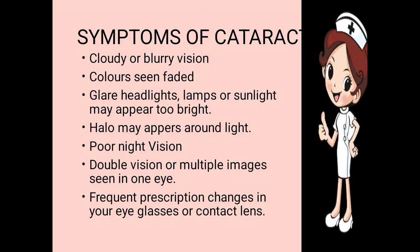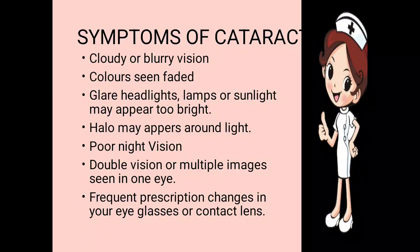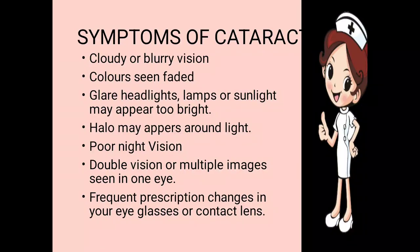Now, what are the symptoms of cataract? The first symptom is cloudy or blurry vision — the vision is there, but everything appears to be cloudy or blurry. Colors are seen faded; every color is visible but appears in a lighter shade when seen through a cataractous lens.